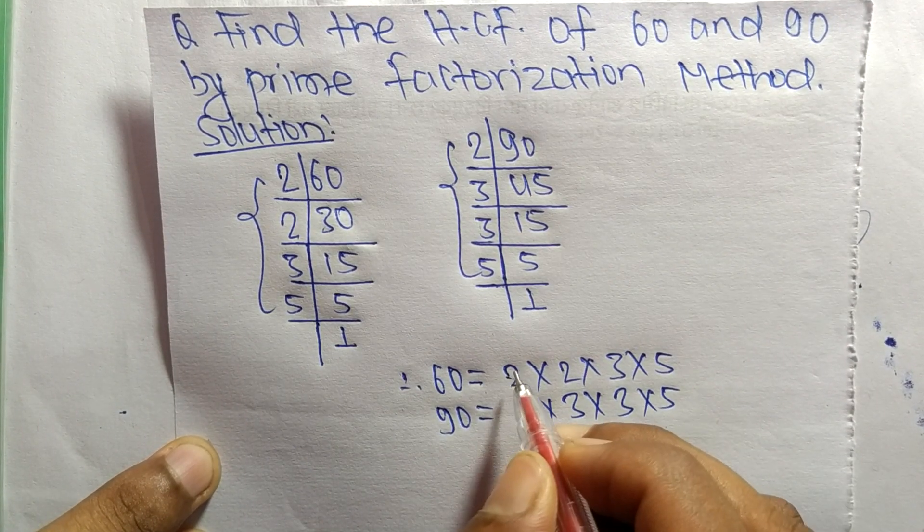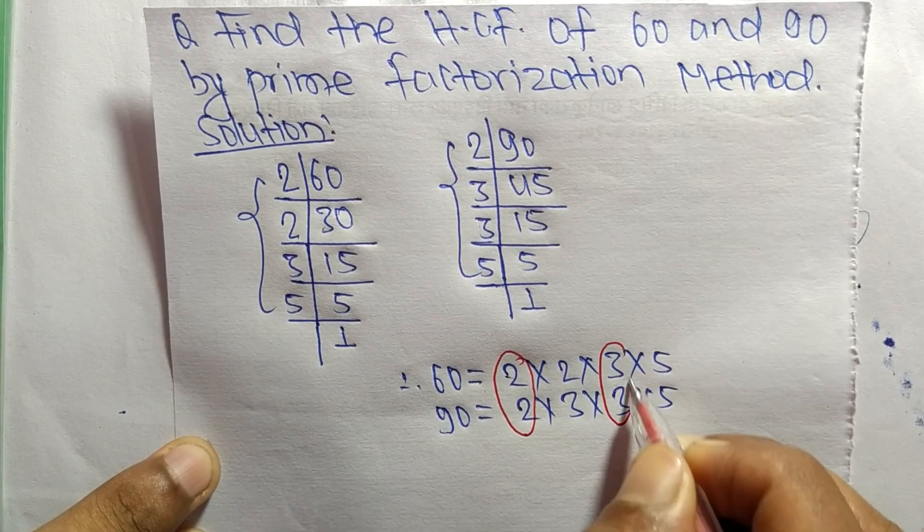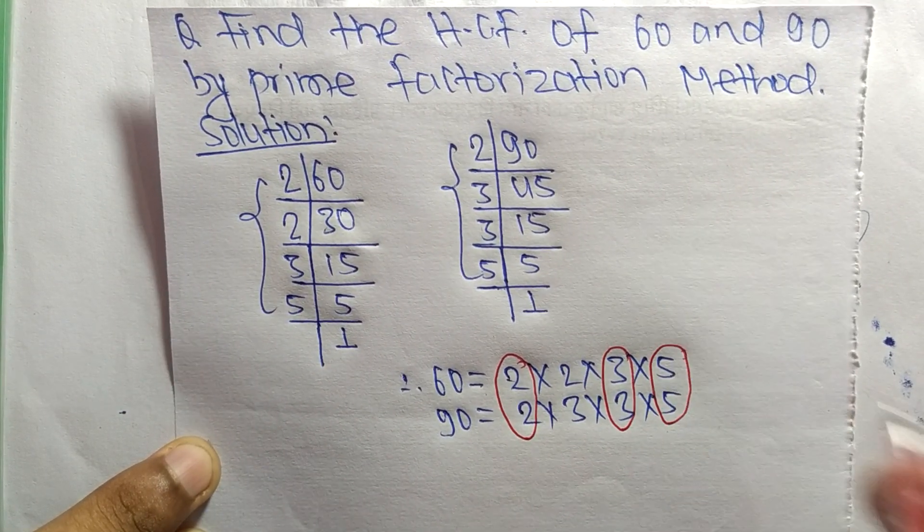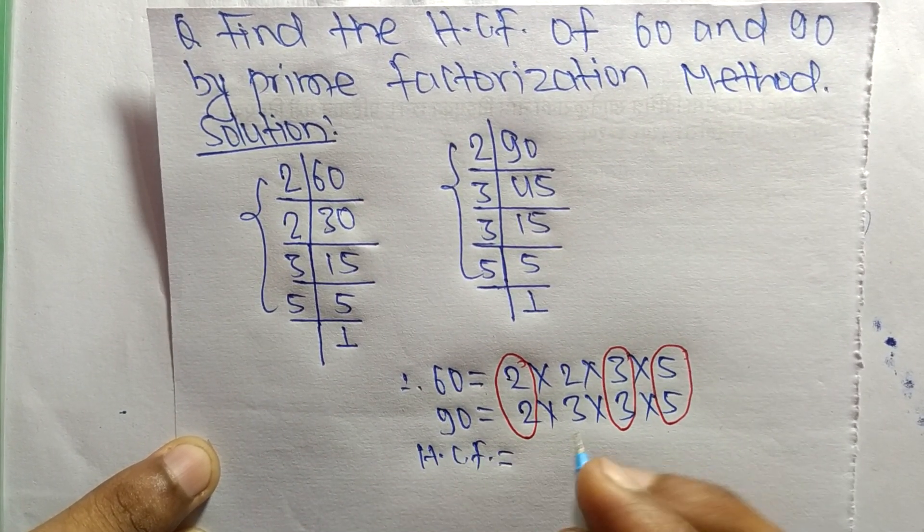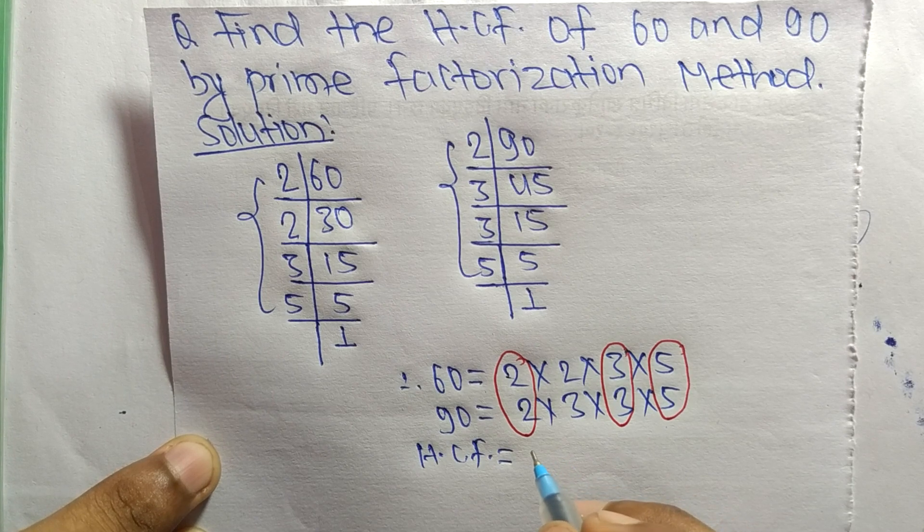The common factors here are 2, 3, and 5. So the HCF is equal to the product of common factors which are 2 times 3 times 5.